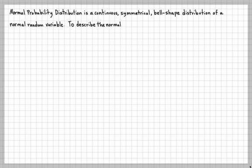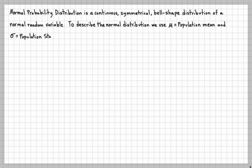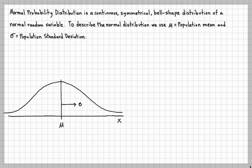To describe the normal distribution we use mu, which is the population mean, and sigma, which is the population standard deviation. One word to describe the mean is balance or average, and one word to describe the standard deviation is spread.